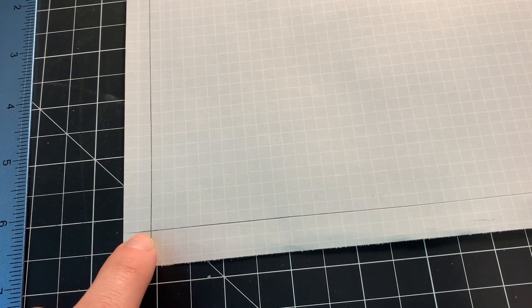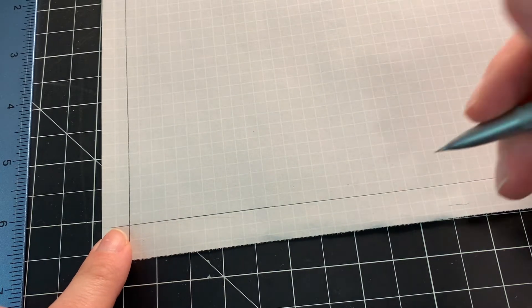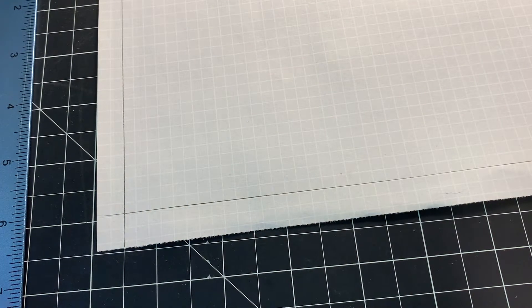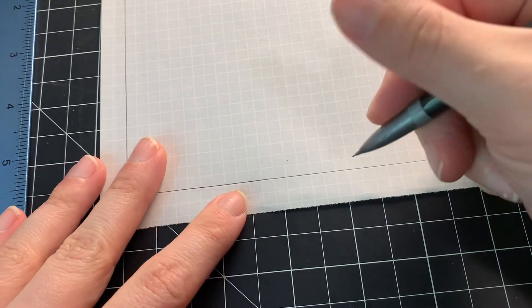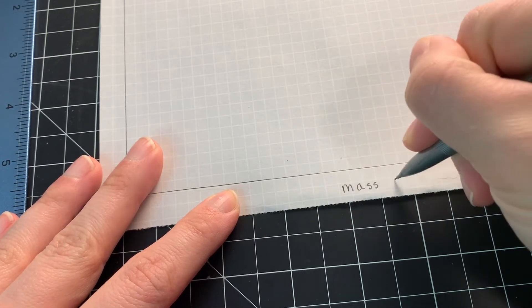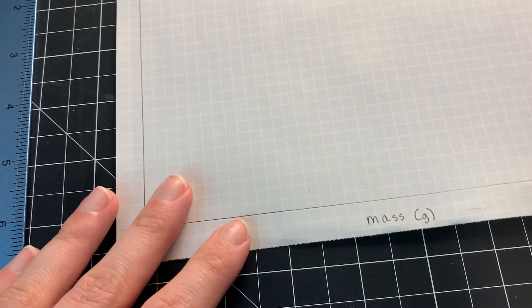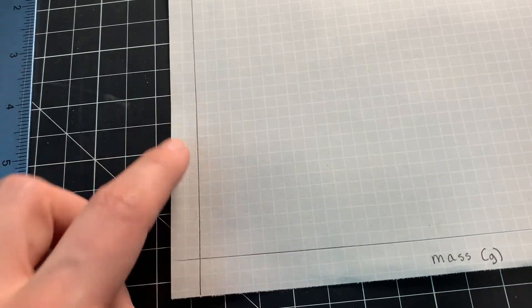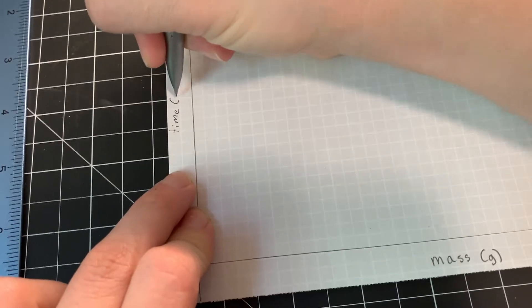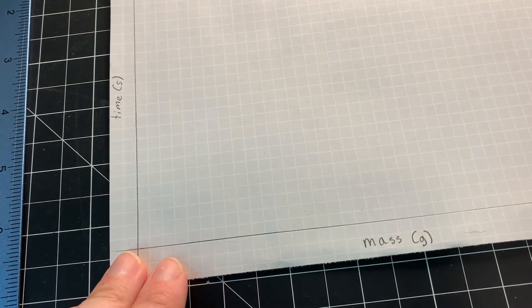This point here, the origin, is going to be zero zero and we're going to label our x-axis, which is where you put the independent variable. So in this case that is going to be the mass in grams. We include both what is being measured and what we're measuring it in, and on the vertical axis we have the time which is measured in seconds.